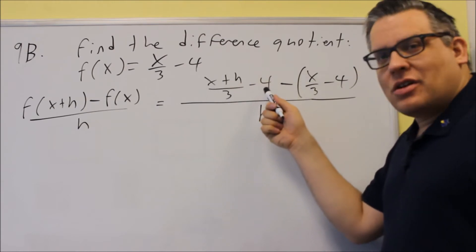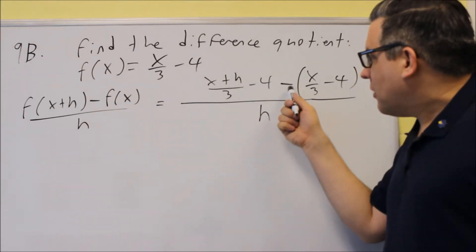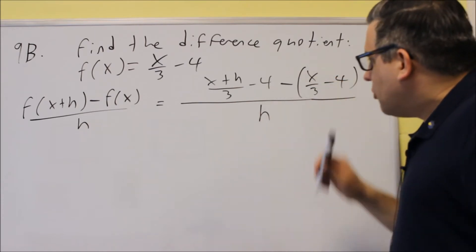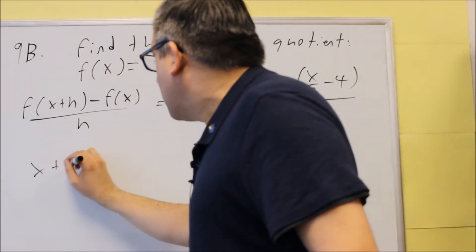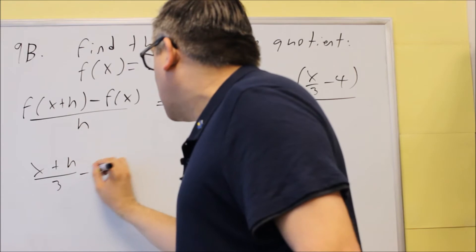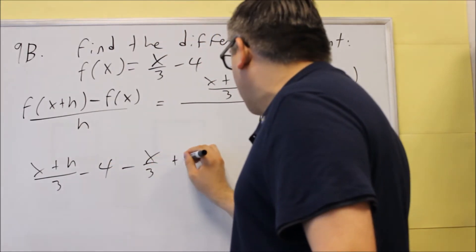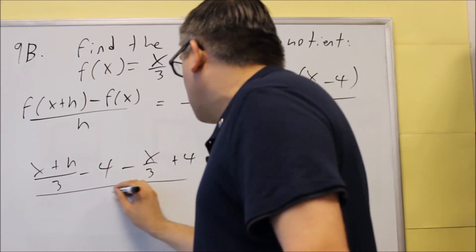So, the first part is your f of x plus h, the minus sign. And this part here is f of x. We can distribute the minus sign. So, we're going to do x plus h over 3 minus 4 minus x over 3 plus 4. And all that's going to be over h.